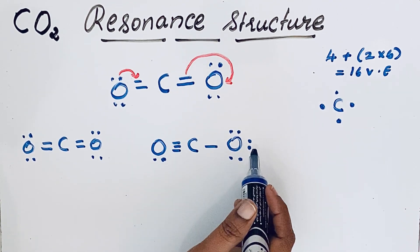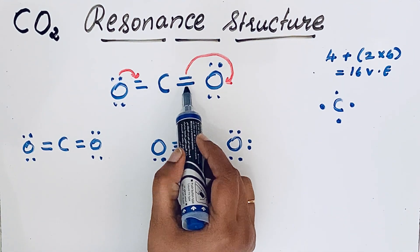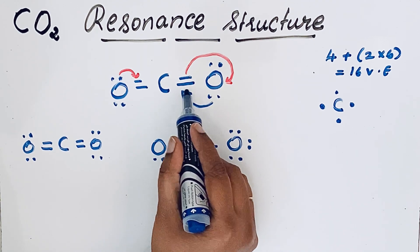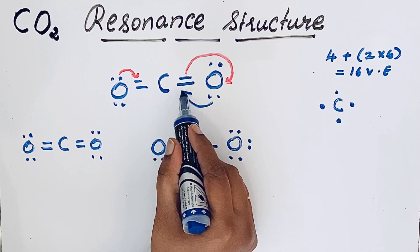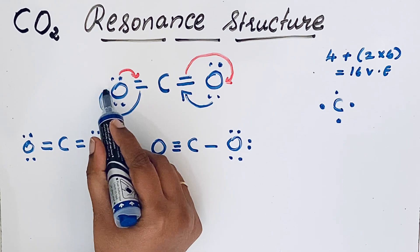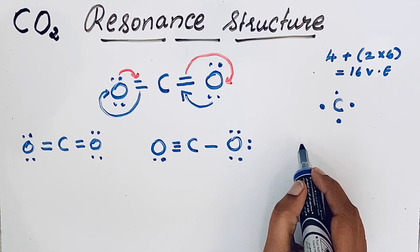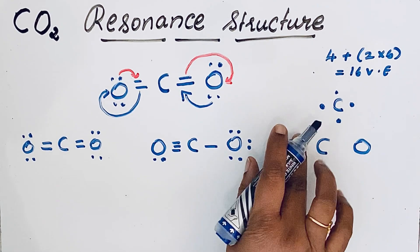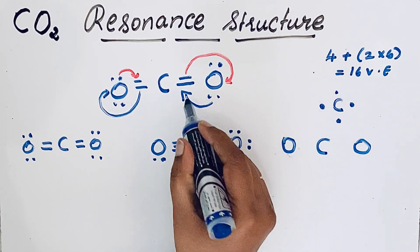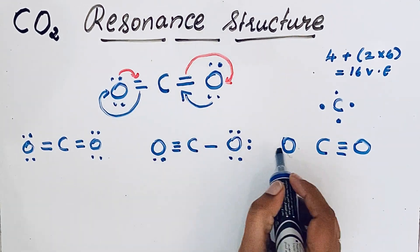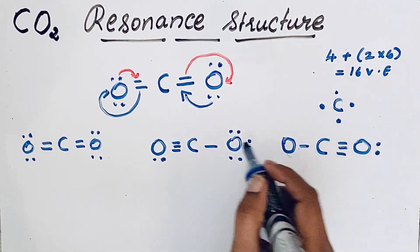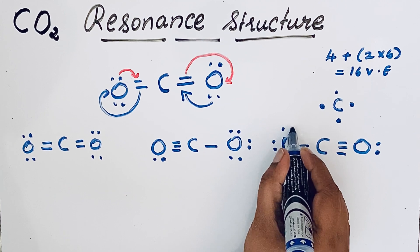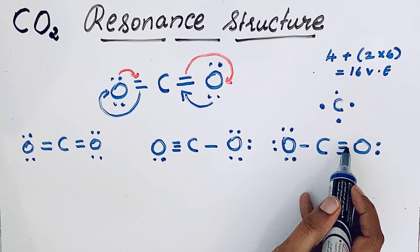For the third resonant structure, the lone pair on the other oxygen atom moves instead. This creates a triple bond between carbon and that oxygen atom, and the opposite double bond breaks to form a lone pair on the first oxygen. Writing the atoms in the same order — carbon, oxygen, oxygen — we now have a single bond on the left and a triple bond on the right, with three lone pairs on the left oxygen and one lone pair on the right.